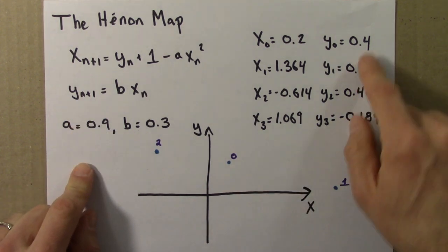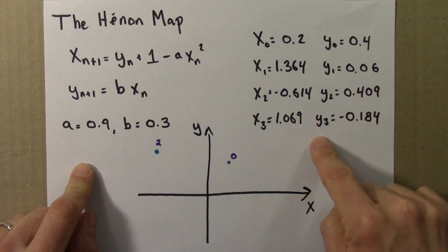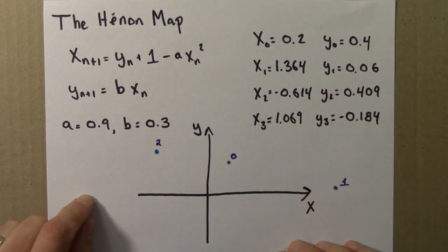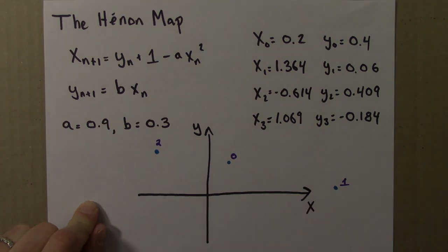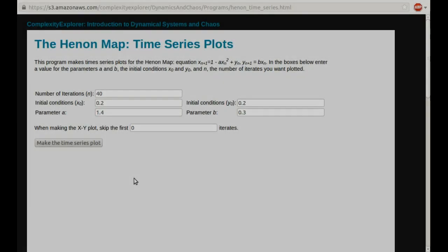So there's a program on the Complexity Explorer site that will do this for us. So let's take a look at that program now and understand some of its features. So here's the program on the Complexity Explorer site that will make time series plots of the Hénon map for us. You can find this program on the site. There's a link to it in the right-hand navigation bar. It shouldn't be too hard to find.